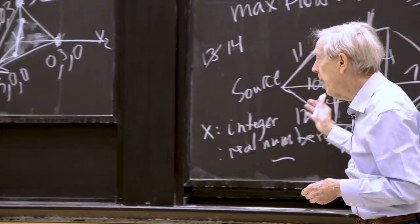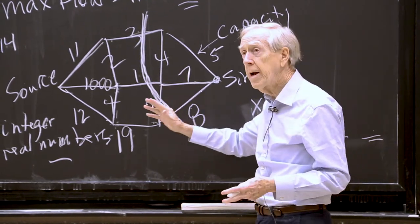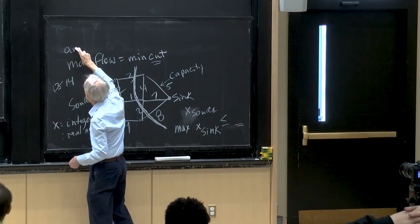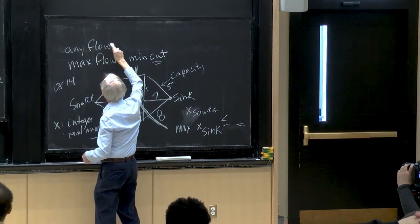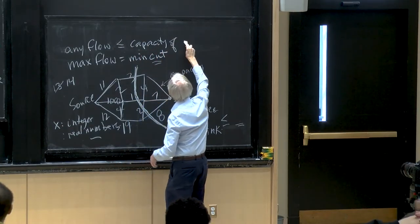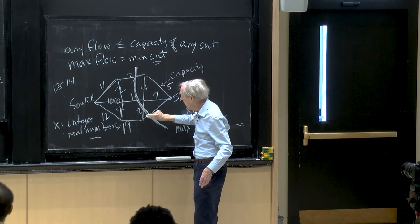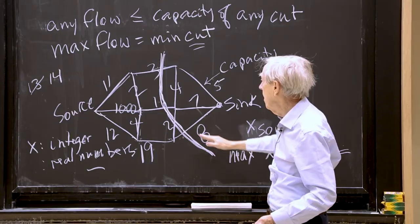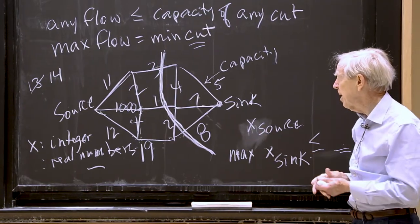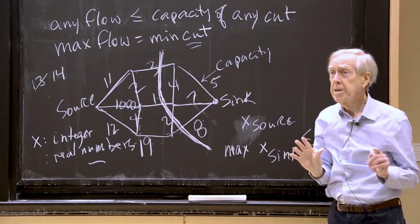This is a case of duality where you can understand it simply: flow can't exceed the capacity of any cut. Any flow ≤ the capacity of any cut, where the capacity is the sum of edge capacities crossing the cut. Other cuts have larger capacity — like 3 + 7 + ... = 22 — so 14 was the minimum cut and gave the maximum flow.